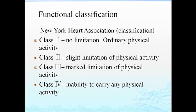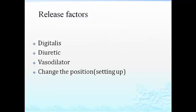The New York Heart Association classification grades dyspnea: Class I — no limitation with ordinary physical activity, no breathlessness or chest tightness; Class II — slight limitation of physical activity; Class III — marked limitation, breathlessness with little activity; Class IV — inability to carry on any physical activity.